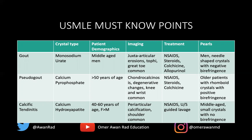The knee is the most common place to get pseudogout. The treatment is NSAIDs, steroids, and colchicine. The pearl on the USMLE is an older patient with rhomboid crystals on synovial analysis with positive birefringence — that's very important.